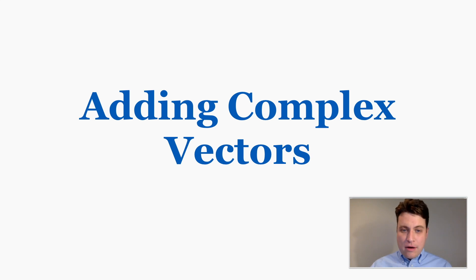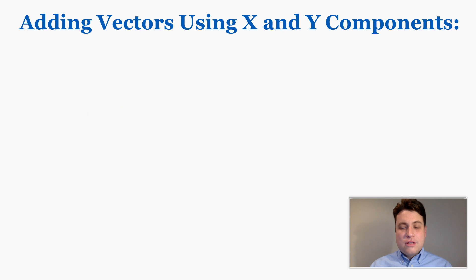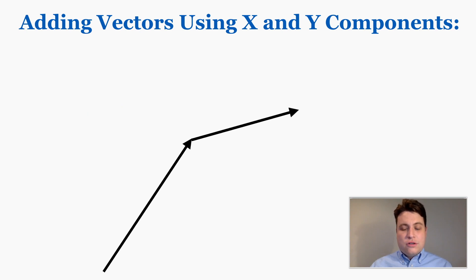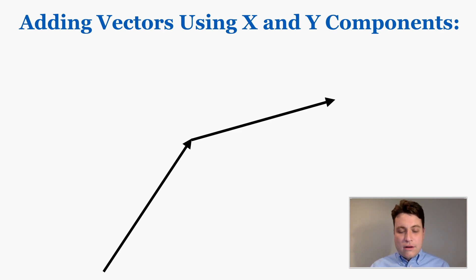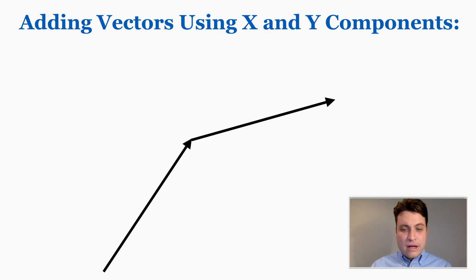This is going to be a short video on how to add complex vectors together. What I mean by complex vectors is vectors that do not just follow a perfectly horizontal or vertical shape — they can have an angle. All the vectors we've added so far have just pointed up, down, left, or right, so you need to have a method of adding these angled vectors together as well.